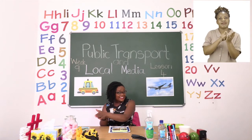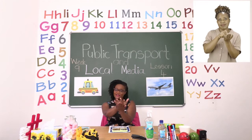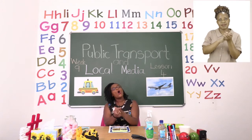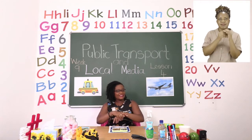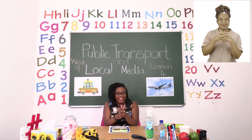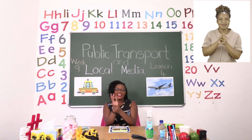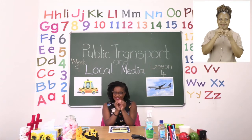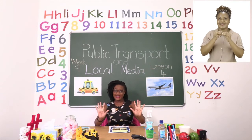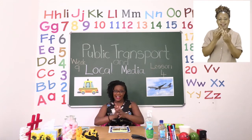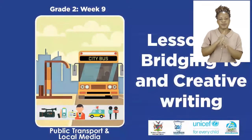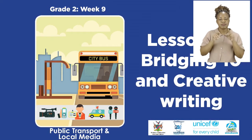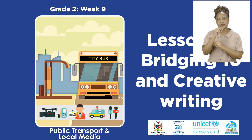So let us take our sanitizer and rub inside, round and round, in between and on our wrists and your fingertips too. Make sure your hands are dry before you touch anything else. For today's lesson, we will be doing bridging in tense and creative writing.